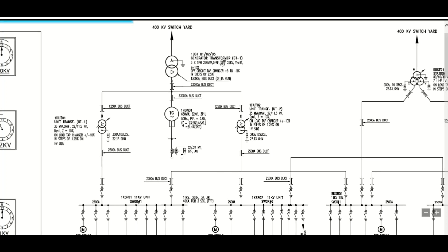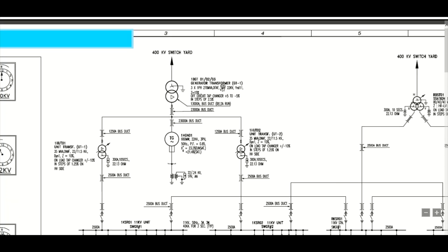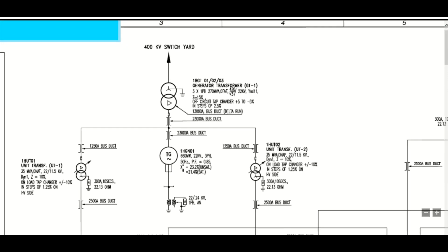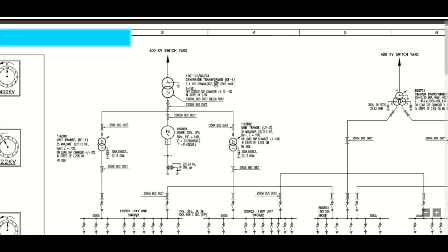Power is generated at 22 kV, then this power is stepped up with the help of this generator step-up transformer. This is a three-into-single-phase 270 MVA generator transformer — we have used three single-phase units, though it can be three-phase also. The voltage is stepped up to 400 kV, going towards the 400 kV switchyard for power evacuation, and will be further connected to the power grid.